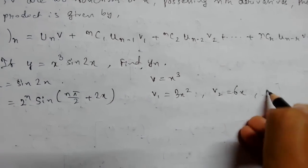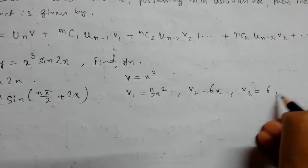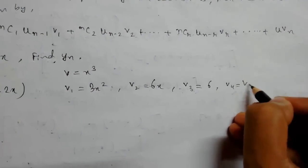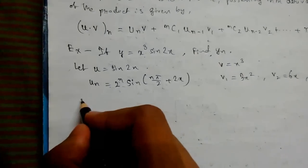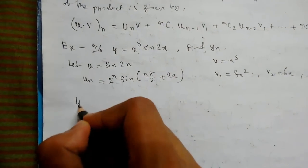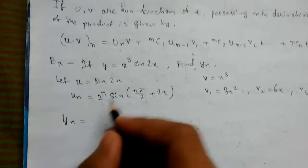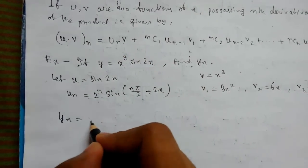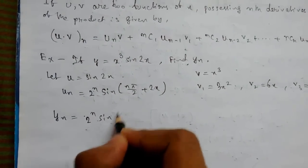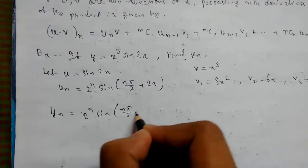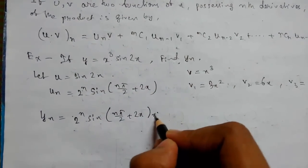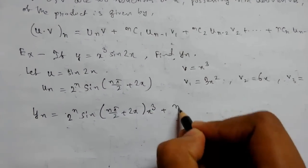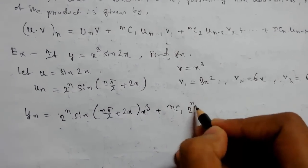Now formula y_n turns out to be: in place of u_n, it will be 2^n·sin(nπ/2 + 2x)·x³. Now nC1·2^(n-1)·sin((n-1)π/2 + 2x)